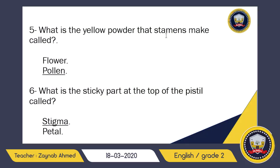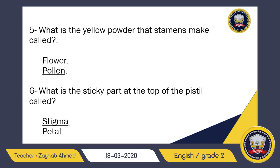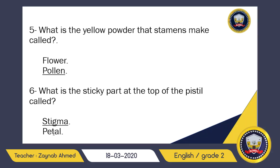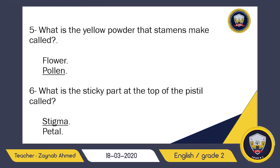Number six: what is the sticky part at the top of the pistil called? It's called stigma — not petal. Stigma is the sticky part. What is a petal? The colorful part of the flower is called a petal. But stigma is the sticky part — the pollen will always stick on the stigma.